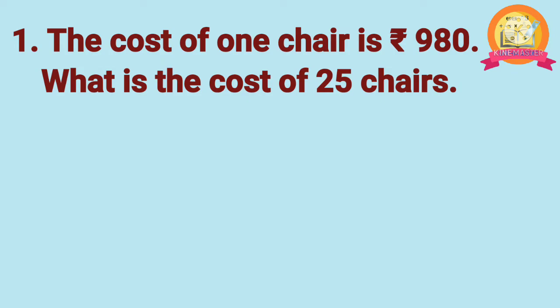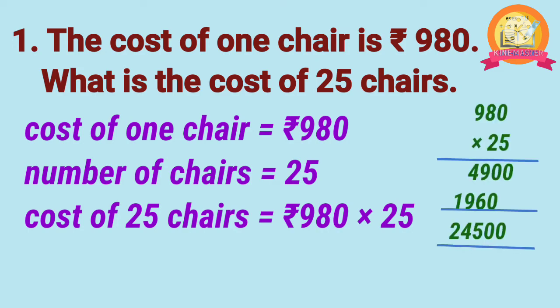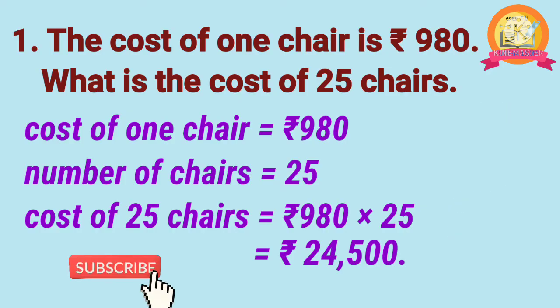Worksheet 4, first problem: The cost of 1 chair is 980 rupees. What is the cost of 25 chairs? Solution: cost of 1 chair is 980 rupees, number of chairs is 25. Cost of 25 chairs: multiply 980 with 25. After multiplication, we get 24,500. Therefore, cost of 25 chairs is equal to 24,500 rupees.